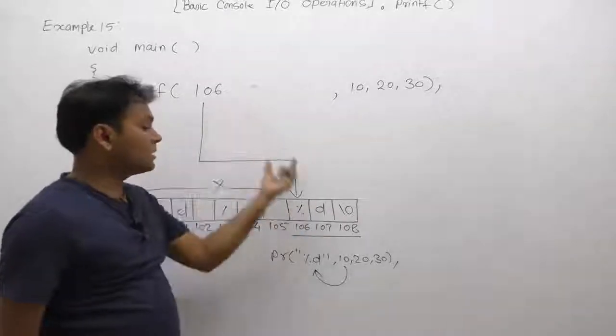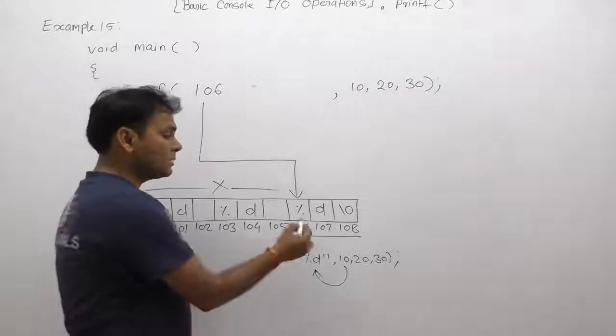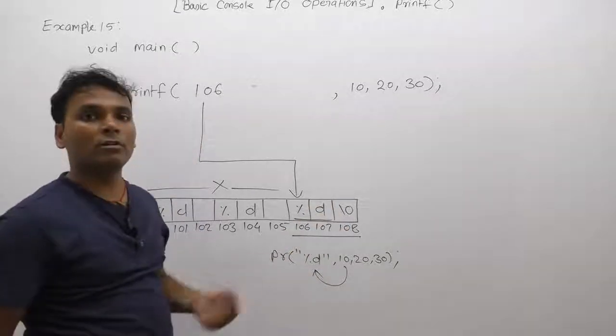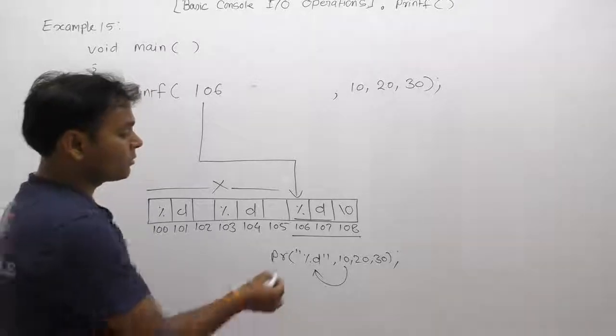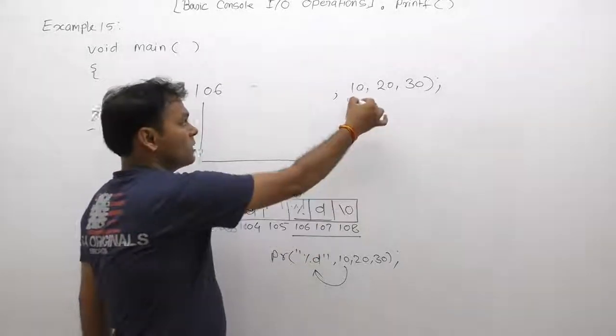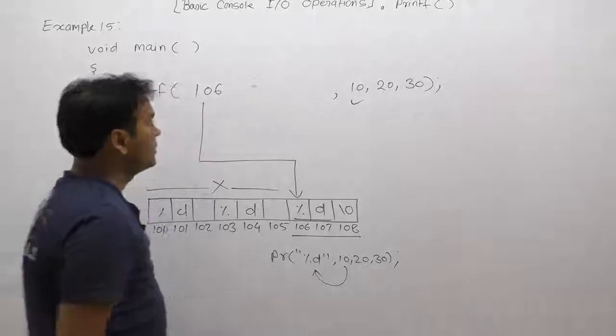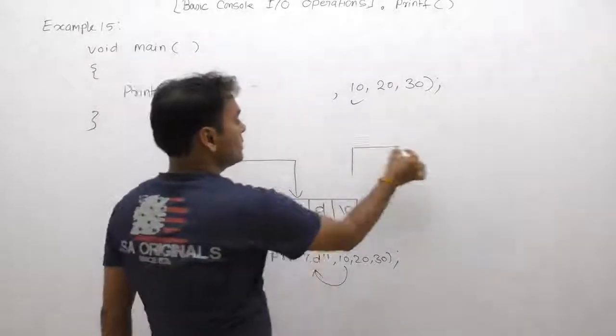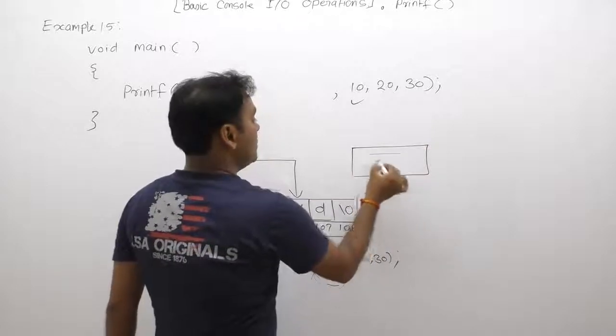Therefore again, format string will be considered from 106 onwards. From 106, total number of format specifiers is only one format specifier, and this format specifier will be replaced by the first corresponding argument. Therefore the final result is 10. Final output of the sprint is only 10.